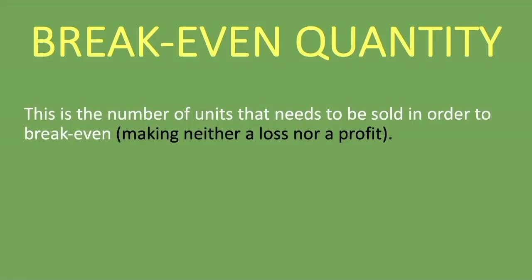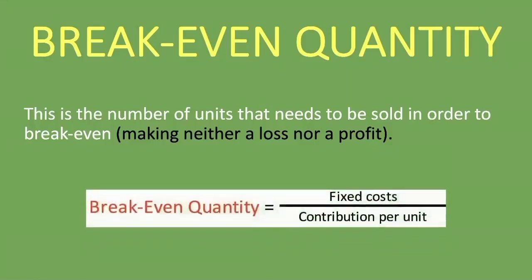If you'd like to check out the lesson on break-even value, or the break-even sales amount, you'll find the link in the description below. Now, what is the formula for the break-even quantity? It's fixed costs divided by the contribution per unit. It's as easy as that. The first thing you usually have to calculate is your contribution per unit; your fixed costs will usually be given.